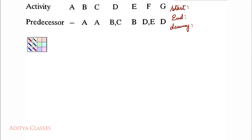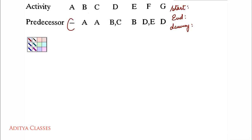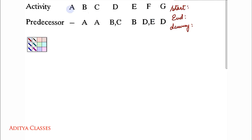How do we know who will start the network? We check all the activities that do not have a predecessor. Here we have a scenario where activity A is waiting for no one. All other activities have a predecessor, so whosoever doesn't have a predecessor will start the network.